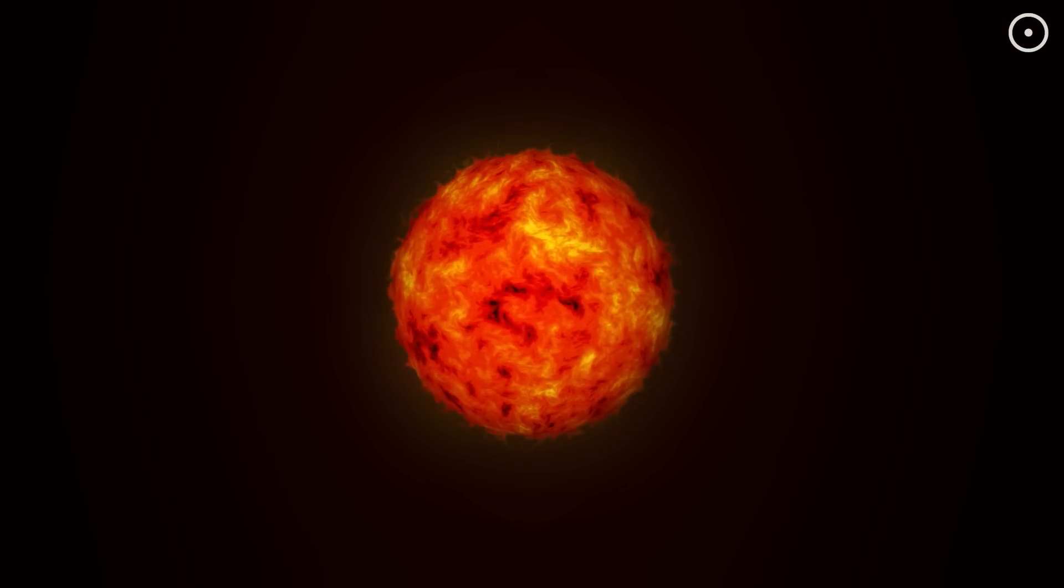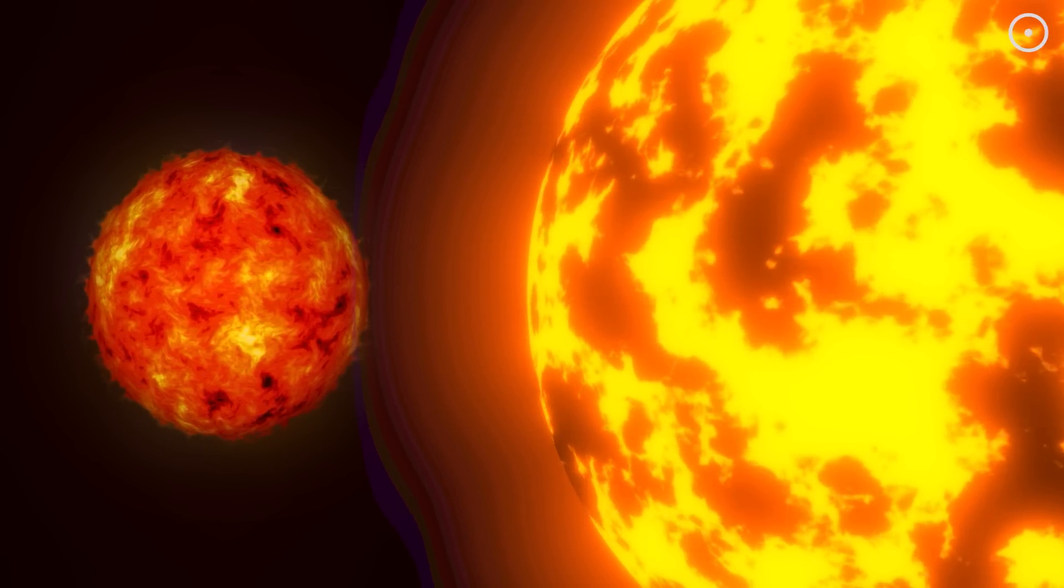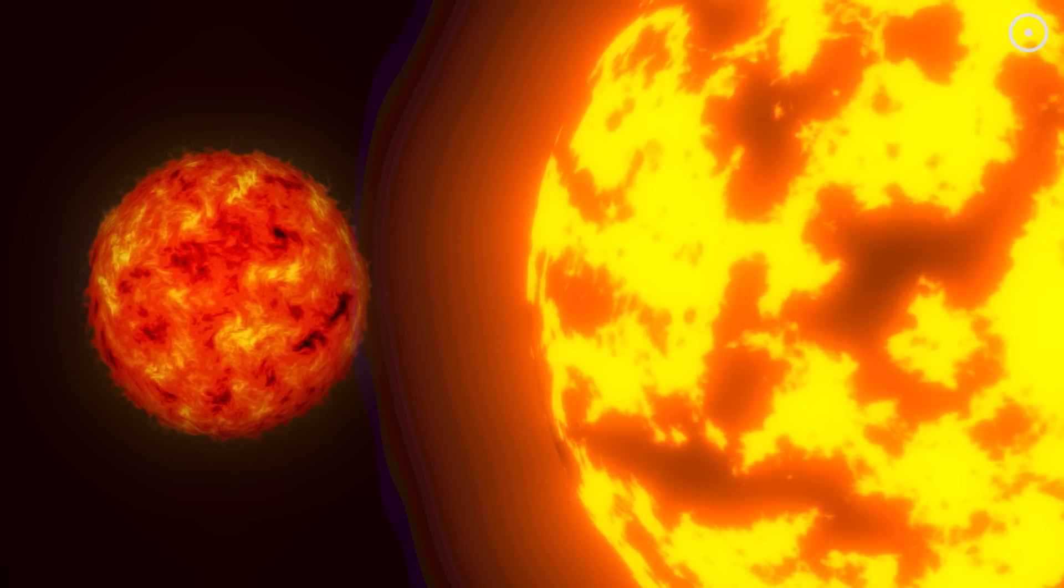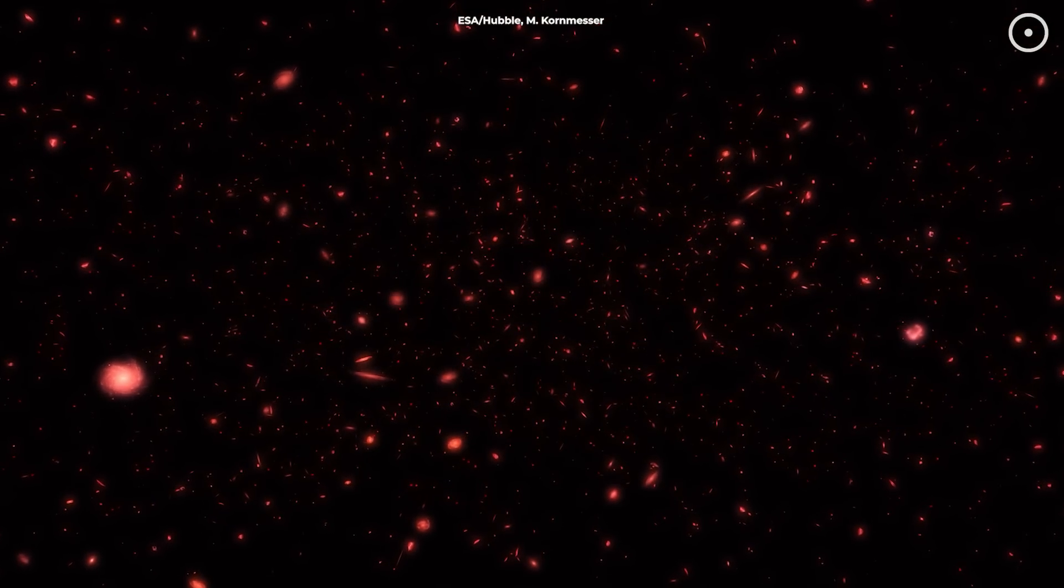A typical red giant can be up to 1,000 times the size of the Sun, but a quasi-star? It's on an entirely different level, dwarfing even the largest red giants. Now, how do these giants form?